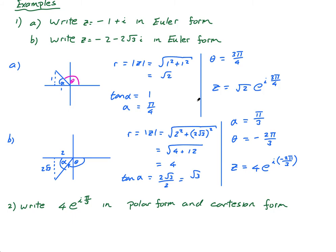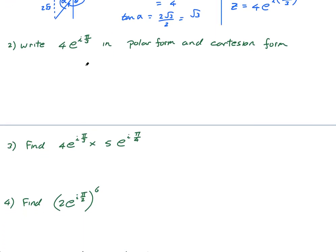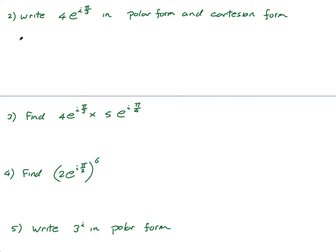Now we need to be able to convert between Cartesian form, polar form (cis form), and Euler form — any one of them to any of the others. To convert from Cartesian to polar or Euler form, you find r and θ. To go backwards from Euler to Cartesian form, you go through polar form first.